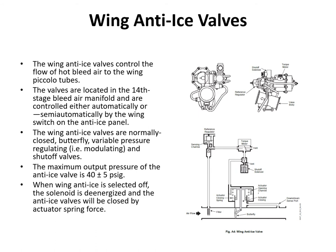The wing anti-ice valves control the flow of hot bleed air to the wing piccolo tubes. They contain a shutoff solenoid which is energized to open, and a torque motor that receives variable current to vary the valve position. The valves are located in the 14th stage bleed air duct and are controlled automatically or semi-automatically by the switch. In the pneumatic system, the 14th stage duct is used for wing anti-ice and reverse thrust, while the 10th stage duct is used for air conditioning. The APU only feeds into the 10th stage duct.